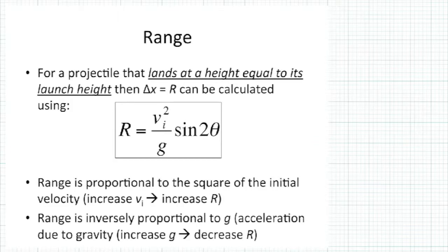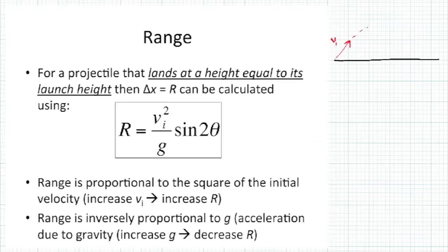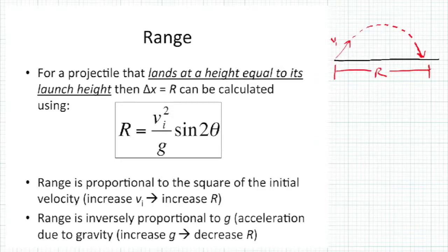Let's move on to the range equation. The range equation applies to projectiles that take off and land at exactly the same height — for example, launched from the ground, going up, and coming back down at exactly the same level. What the range tells us is how far downrange the projectile will travel.